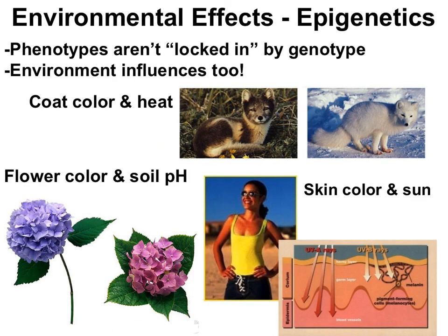The last concept is epigenetics. Our focus has been that phenotype is only due to genotype, but environmental conditions can also shape the phenotype. Three classic examples: Arctic foxes make pigment in warm summer conditions but not in the cold, so the same fox is darker in warm environments. The hydrangea flower changes color — purple or pink — depending on soil pH. In humans, the amount of sun exposure influences skin color. While the basics of skin color are genetically programmed, environmental conditions play a role in the final phenotype. This is epigenetics.